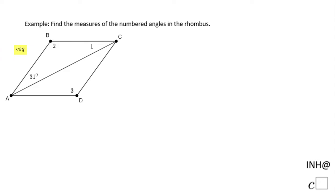Welcome or welcome back to Math Help at C-Squared. In this example we look at a rhombus, and we need to find the numbered angles 1, 2, and 3. If you remember, a rhombus is a parallelogram which has all sides equal, but it also has a property...